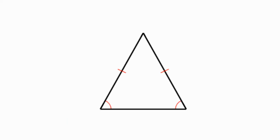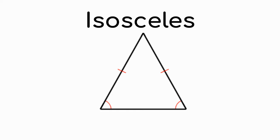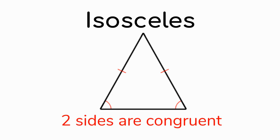Here's another triangle. Two sides of this triangle are equal, and the word for that is isosceles. This is an isosceles triangle, and isosceles means that two sides are congruent. You can see the left and the right side both have that dash, but the base — the bottom of the triangle — is shorter. So it is an isosceles triangle.